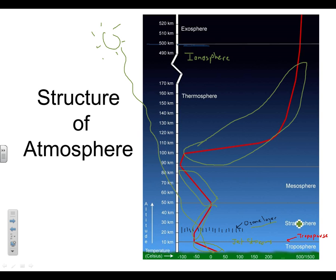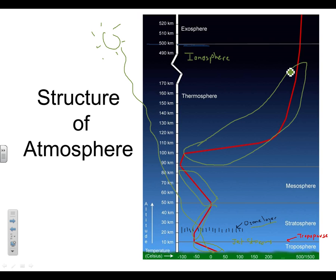The stratosphere is the second layer. Temperature increases with altitude because the ozone absorbs UV light. The mesosphere is the third layer and gets colder with altitude. The thermosphere is the top layer, and temperature increases because solar energy is absorbed by air molecules.